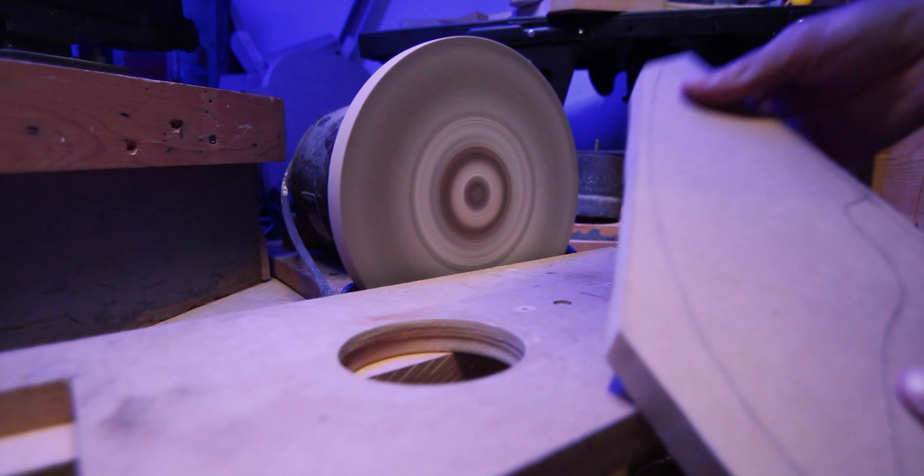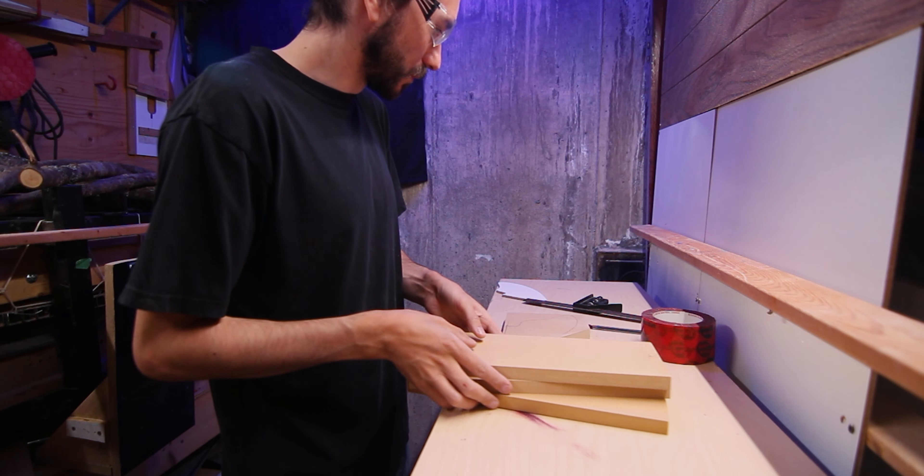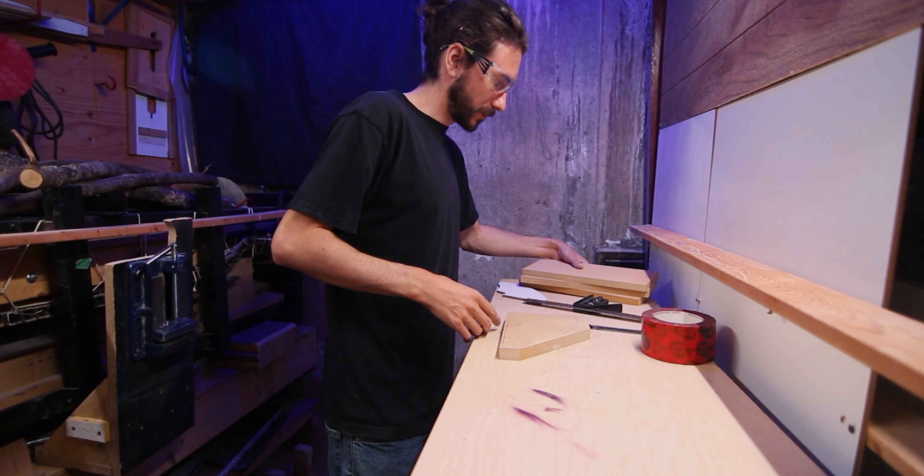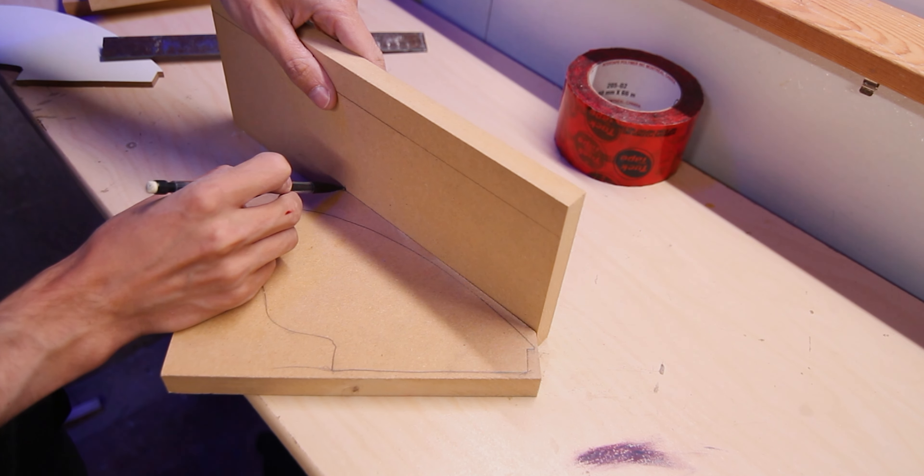To limit how much resin I need, I'm going to make a mold roughly in the shape of my fin. I'll start by tracing my fin template on the bottom of the mold, then mark out where the sides will be, giving each side a little space around the fin template.